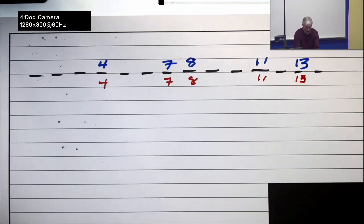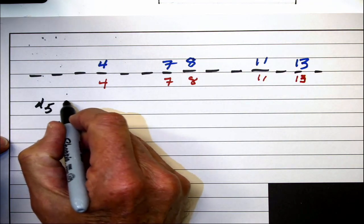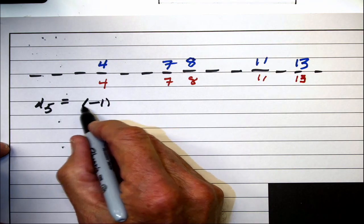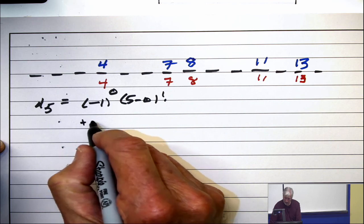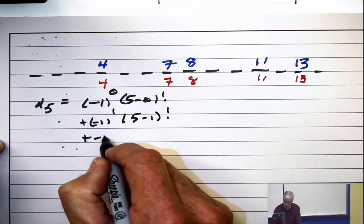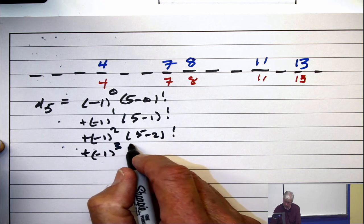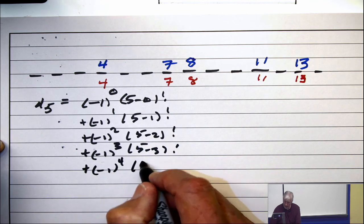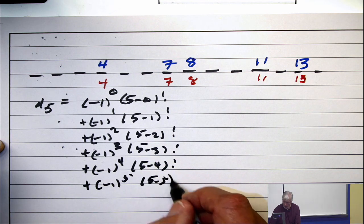Back to our challenge. Let's get D5 and see how hard this is. So it's minus 1 to the 0 times 5 minus 0 factorial. It's plus minus 1 to the 1 times 5 minus 1 factorial. Plus minus 1 squared times 5 minus 2 factorial. Plus minus 1 to the 3 times 5 minus 3 factorial. Plus minus 1 to the 4 times 5 minus 4 factorial. Plus minus 1 to the 5 times 5 minus 5 factorial.